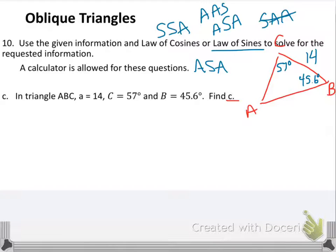To find angle A, I simply say 180 minus the other two angles, so minus 57, minus 45.6, and I'm going to find that angle A is equal to 77.4 degrees. So that's my angle A.